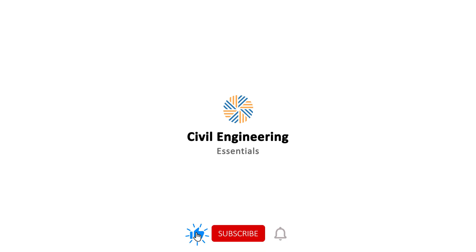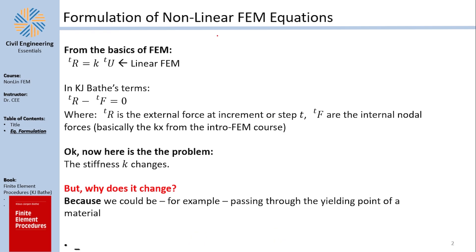From the basics of the finite element method, we know that the external force F equals the stiffness matrix K multiplied by the displacement matrix D. In Bathe's notation, F is replaced by R, and D is replaced by displacement U, with a superscript t denoting the increment.